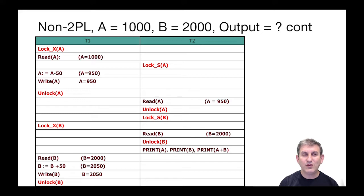In T1 we start by getting an exclusive lock on A, and then we do a read of A and we see 1000. T2 comes along and tries to get a shared lock on A but has to wait for T1. T1 continues, subtracting 50 from A in memory and then writing that A to disk. So now on disk A is 950 and T1 unlocks A.